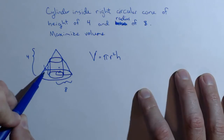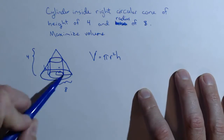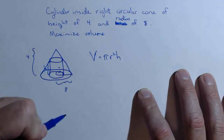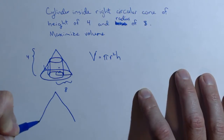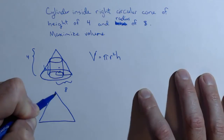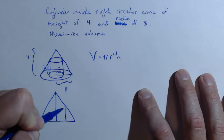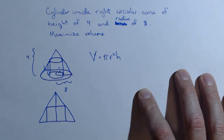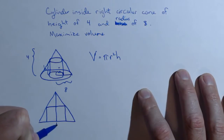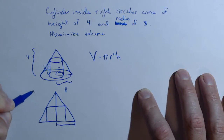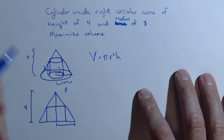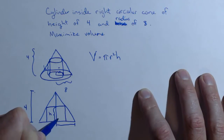We need to get this in terms of one variable. If we look at the cone directly from the side, we have a triangle, and our cylinder — this is an arbitrary cylinder, I don't know that that's a maximum volume, but it gives me something to work with. The distance from one side to the other is 8, the height is 4, this height here is h, and this distance here is little r, based on my drawing.